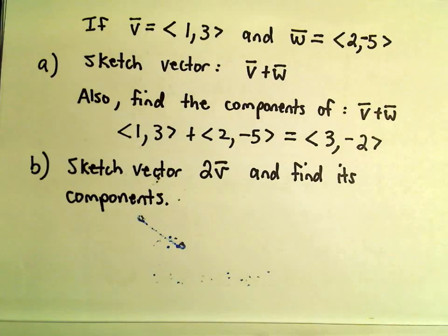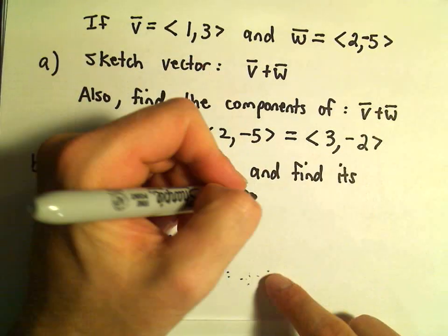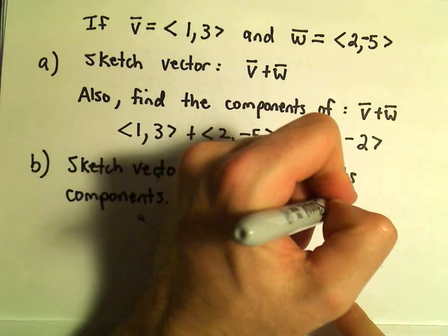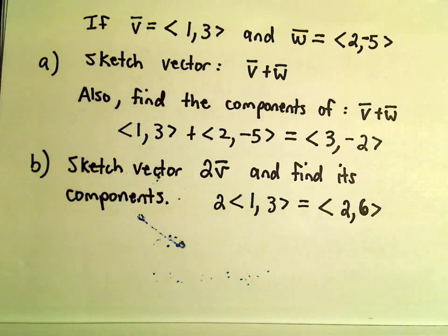And again, if we just use our rule that says you just multiply, it says you would have 2 times vector v, which is 1 and 3, and if you distribute the 2, we will get 2 and 6 for the components of our new vector.